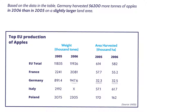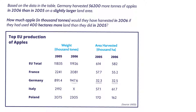Here is the question posed by the test. Based on the data in the table, Germany harvested 56,200 more tonnes of apples in 2006 than in 2005, on a slightly larger land area. How much apple in 1,000 tonnes would they have harvested in 2006 if they had used 400 hectares more land than they did in 2005?